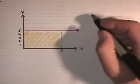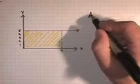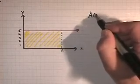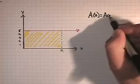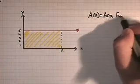As you know, the area of a rectangle is its length times its width. The capital A with an x stands for an area function.